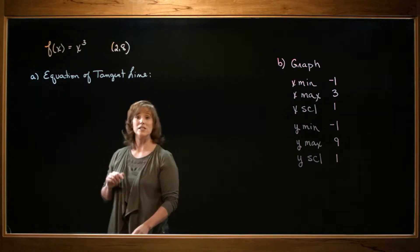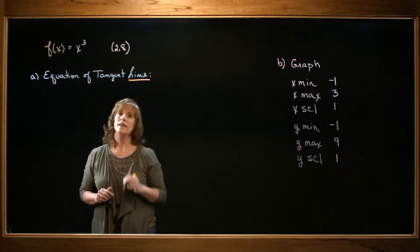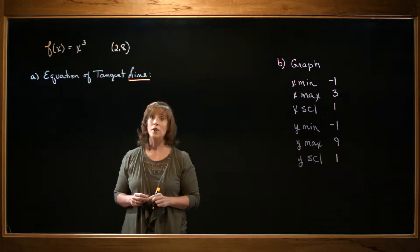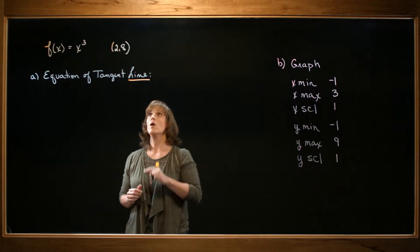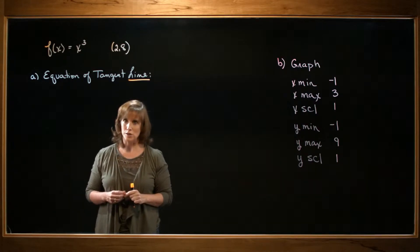First, we need the equation of our tangent line. Now, we're looking for the equation of a line. To find the equation of a line, you need two things. You need the slope, and you need one point on the line. Well, we already know a point that's on the line, so we're good there. But we need to find the slope.